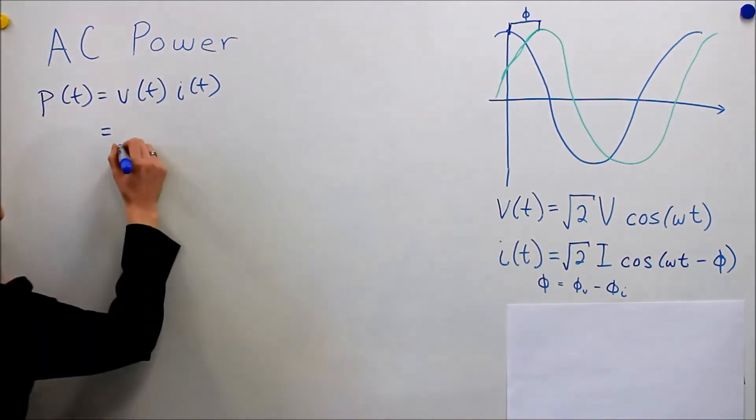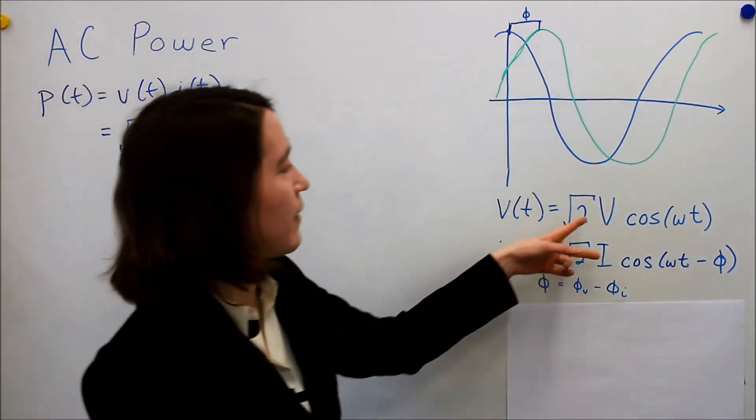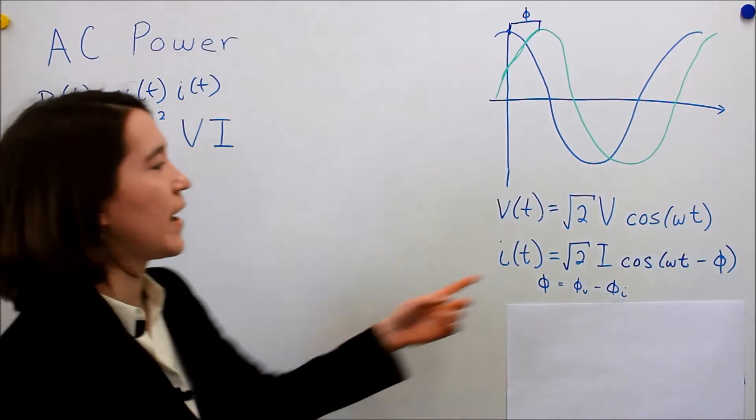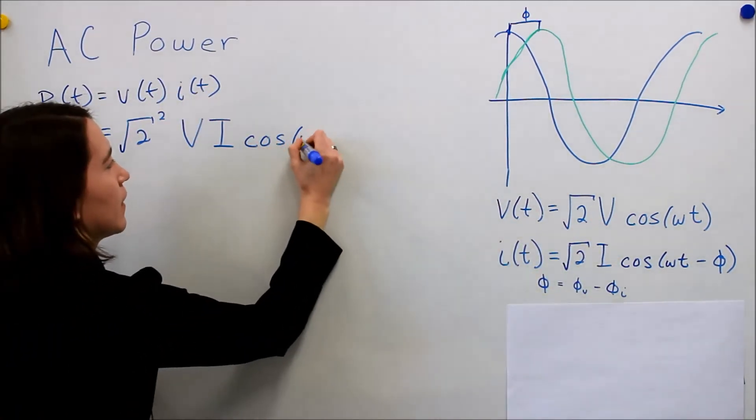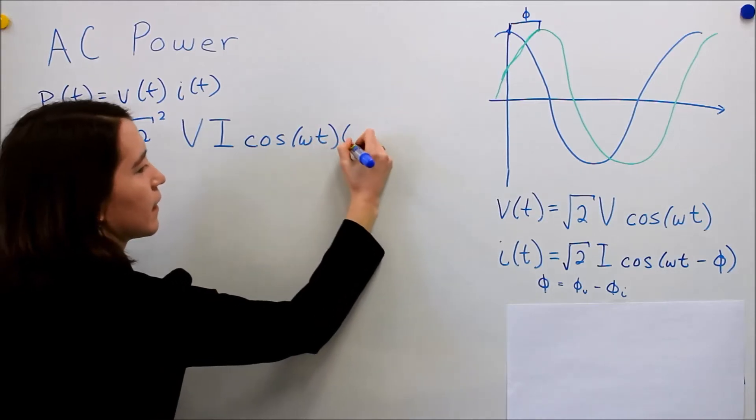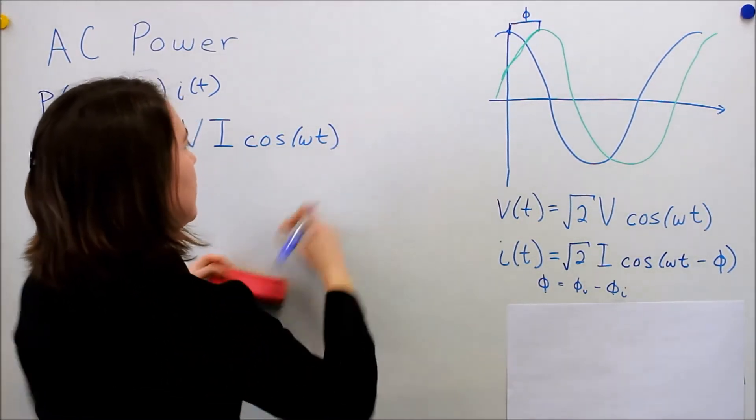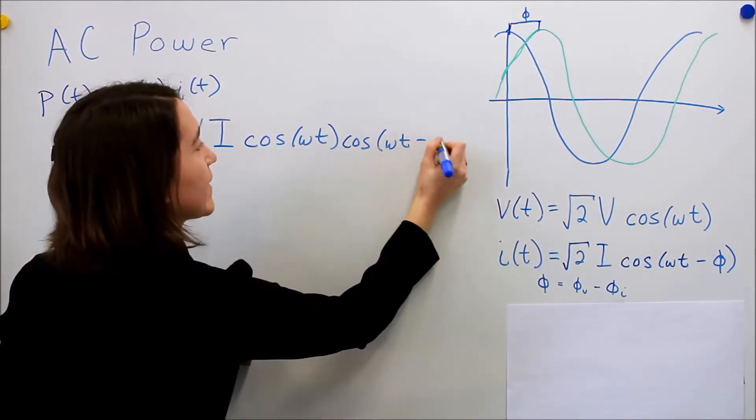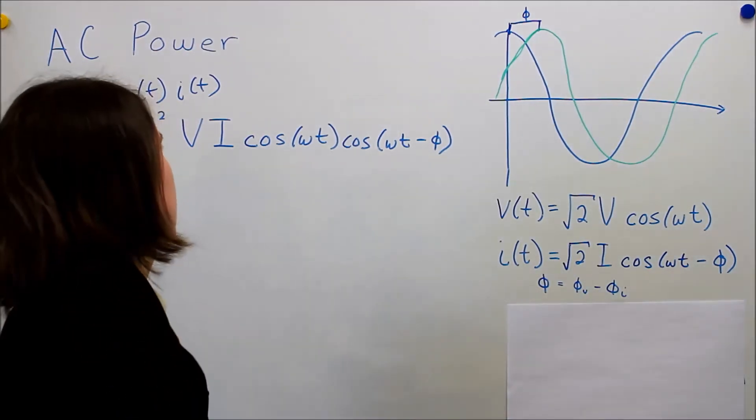We're going to get a root 2 and we're going to square it. So it's going to be just 2. Then we have v and i, the RMS values. And then we have 2 cosines. So let's just multiply them together. So now we have the cosine of omega t minus our phase shift between our 2 waveforms.